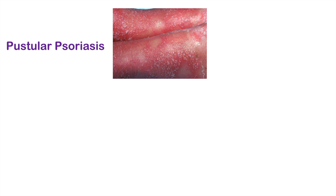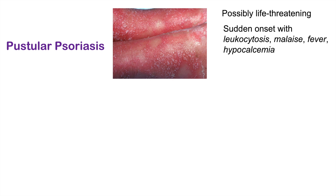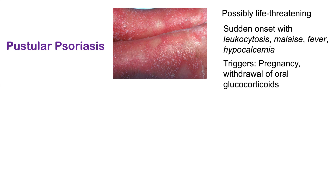Pustular psoriasis is a possibly life-threatening type of psoriasis with sudden onset. It is associated with leukocytosis, malaise, fever, and hypocalcemia. Triggers include pregnancy and withdrawal of oral glucocorticoids — so if someone stops taking glucocorticoids, a pustular psoriasis eruption is possible. It presents as many pustules.